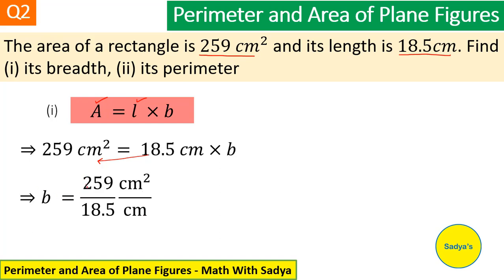When we divide 259 by 18.5, we get 14 and cm square divided by cm. One cm is cut with this one cm and we are left with cm. So breadth is equal to 14 cm.